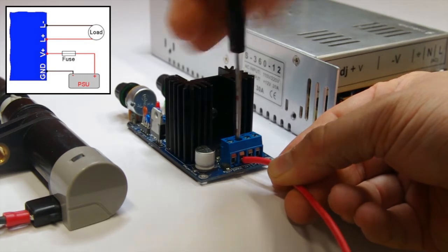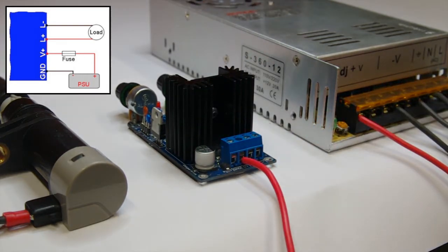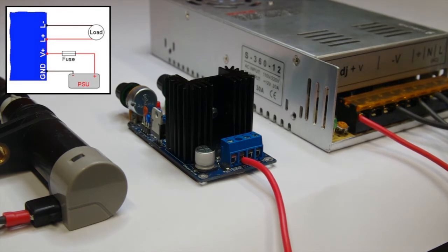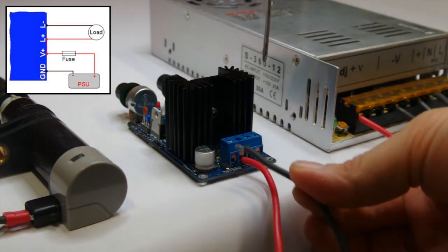The V plus on the OCXI connects to the positive terminal of your power supply. Ground on the OCXI connects to the negative terminal of your power supply. That is V minus.